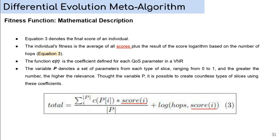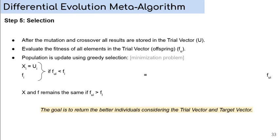The final step is the selection. After the mutation and crossover, all results are stored in the trial vector. Next, we need to evaluate the fitness of all elements in the trial vector. The population, or the final population, is updated using the greedy selection. Here, we can see the equation. This equation is a very simple idea. It is to take only the element of the trial vector or the target vector that has the lower fitness value. The goal is to return the better individuals considering the trial vector and the target vector.